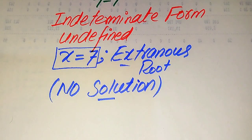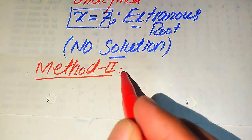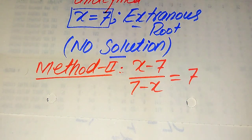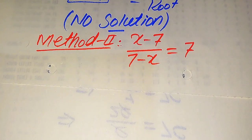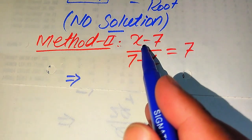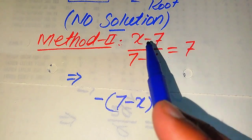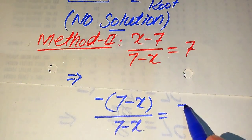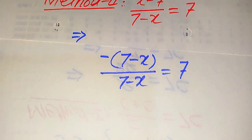Now we solve this problem using a second method. The given equation is x minus 7 divided by 7 minus x equals 7. In the second method, I will give you a quicker way to find the roots. Here we take out a common negative sign from the numerator term. When we factor out a negative sign from x minus 7, we interchange the signs of both terms, giving us negative times of 7 minus x in the numerator, over 7 minus x in the denominator, equals 7.